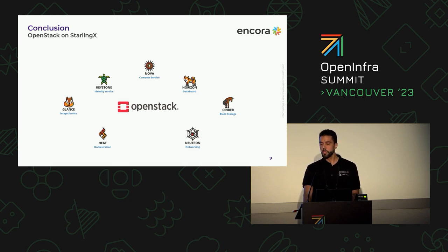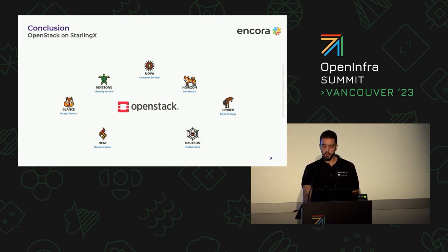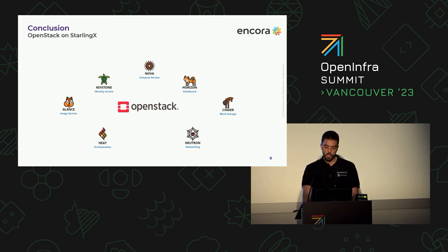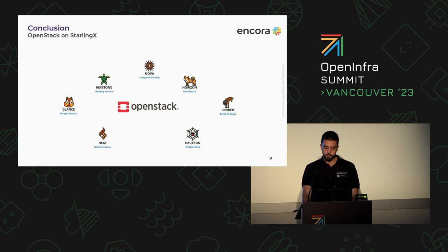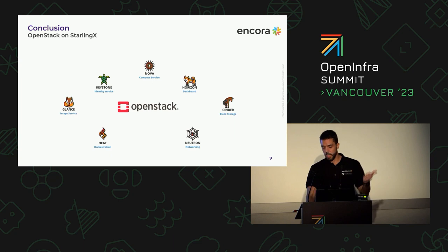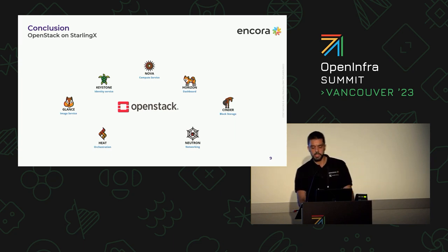In conclusion, the ability to launch VMs using STX OpenStack within a StarlingX cluster is a game-changing capability with a multitude of benefits. By leveraging this powerful toolset, we gain management of traditional VM workloads, optimize resource utilization, and solidify security in promoting interoperability across our infrastructure. With STX OpenStack, we have the means to meet ever-evolving business demands in a cost-effective, scalable, and adaptable manner.